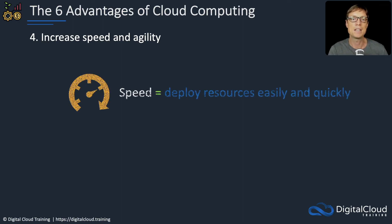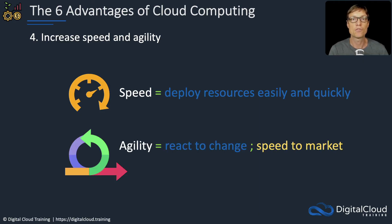The next benefit is speed and agility. Speed is the ability to deploy resources easily and quickly through API calls, the command line, or the management console — and you can do so around the world. Agility is the ability to react to change and bring things to market faster, so in a competitive situation you can respond to your customers' needs better than your competitor.